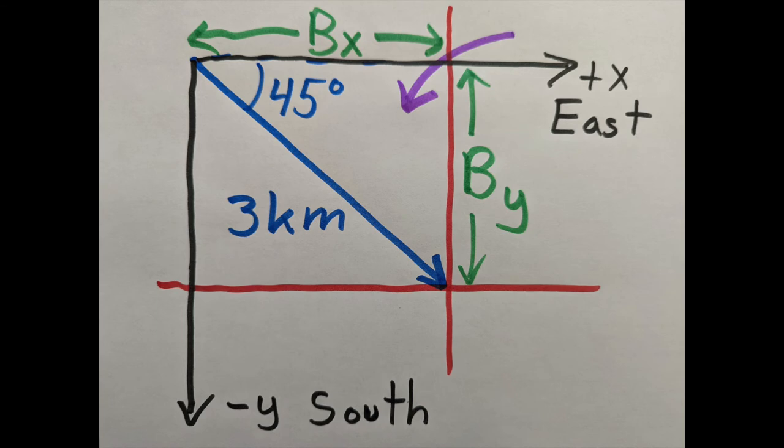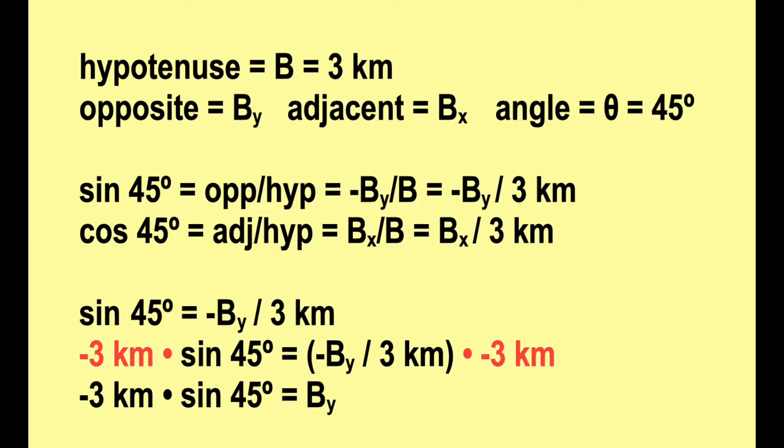Notice that since the vector points to the right, B sub X is going to be a positive number. And since the vector points down, B sub Y is going to be a negative number. Since I'm using a positive 45 degrees, that means I have to insert a minus sign to say that the opposite is negative B sub Y, not just B sub Y.